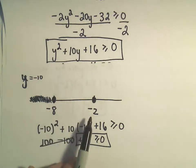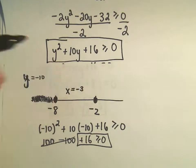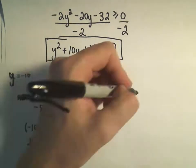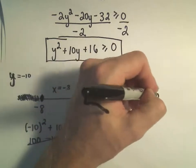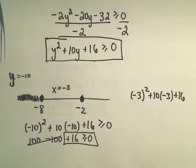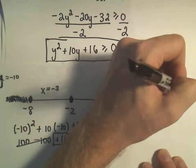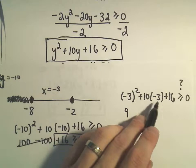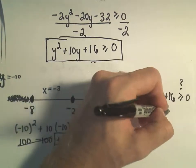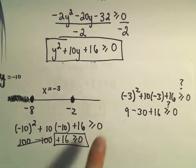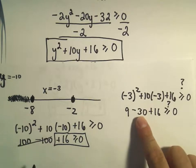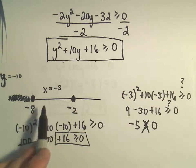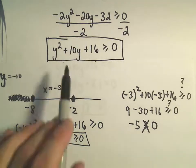If I take a number in between negative 8 and negative 2, I'll use negative 3 since small numbers make the arithmetic easier. Plugging negative 3 into my inequality: negative 3 squared plus 10 times negative 3 plus 16. Negative 3 times negative 3 is 9; positive 10 times negative 3 is negative 30, plus 16. Is that greater than or equal to zero? 9 plus 16 is 25, and 25 minus 30 is negative 5. Negative 5 is not greater than or equal to zero. So no number in between negative 8 and negative 2 will satisfy the inequality.